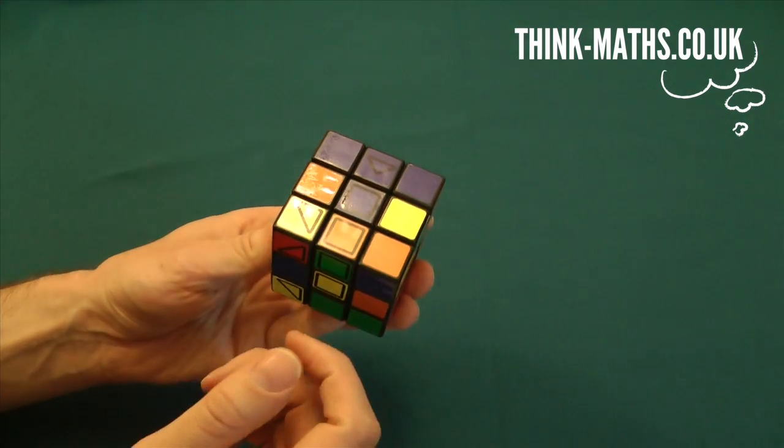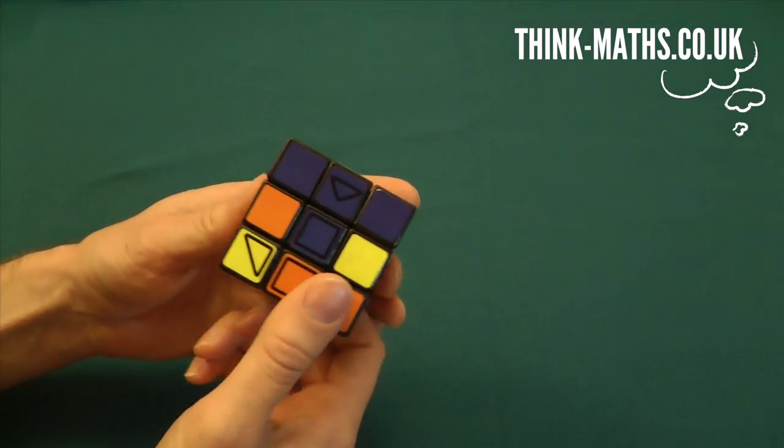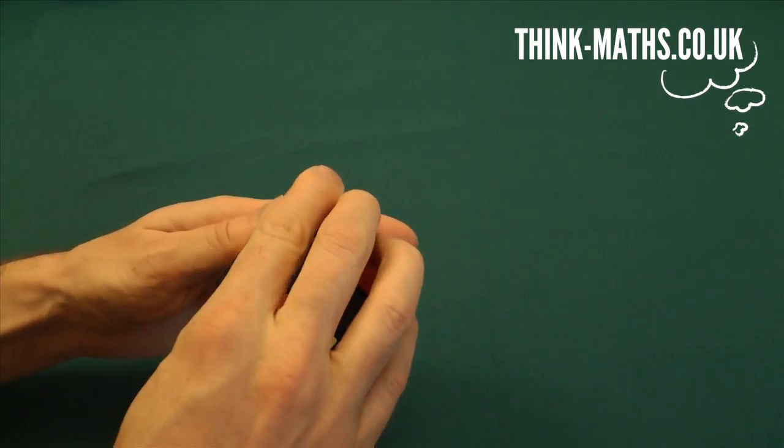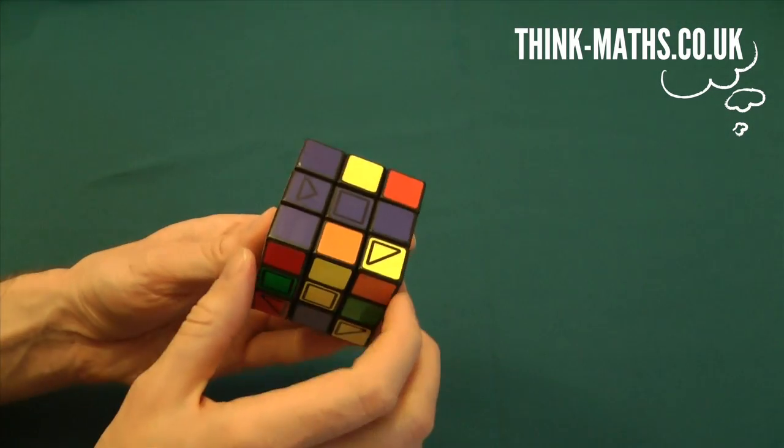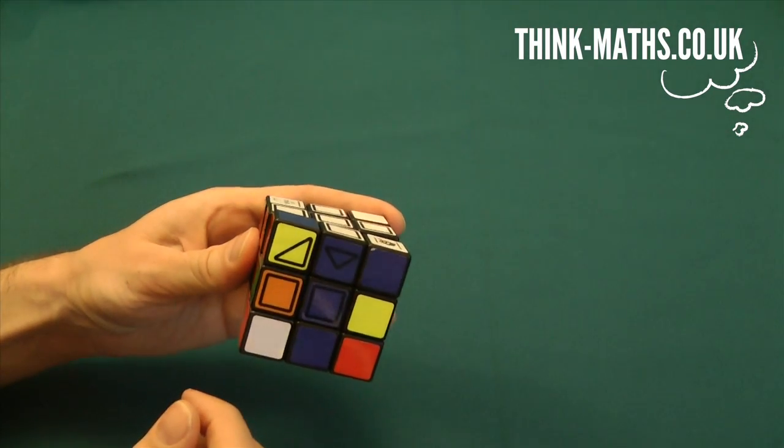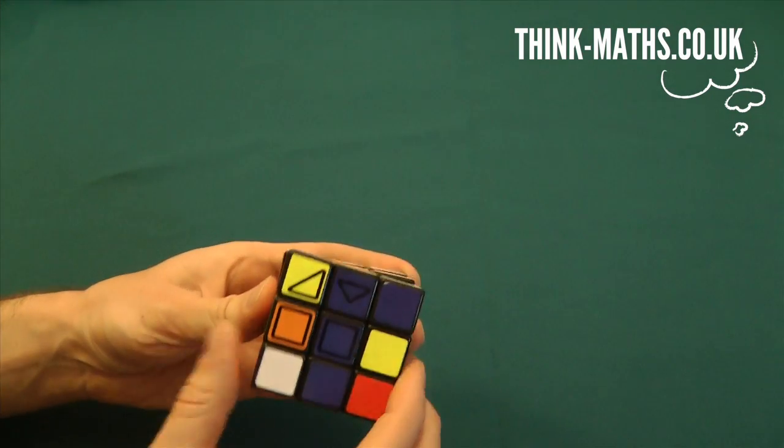And edge swap two is you take the down one and you go anti-clockwise. You then take the front face and you go anti-clockwise. And then you kind of undo that. So the down one goes clockwise, front face goes clockwise. As you can see, that has not helped in the slightest.